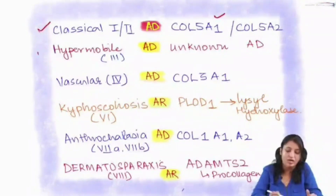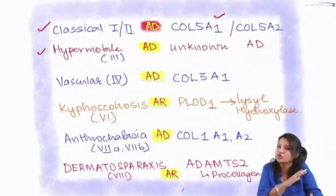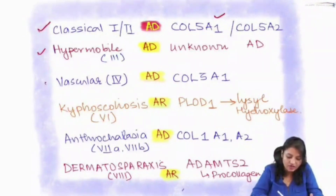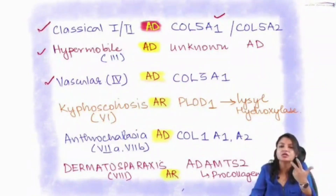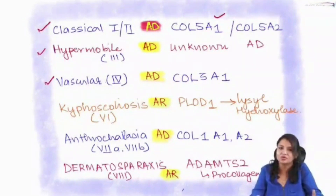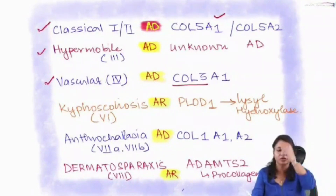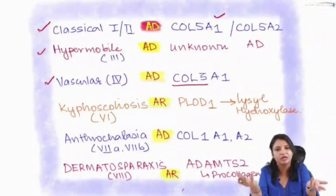The second type is the hypermobile type. Remember, the genes of all Ehlers-Danlos subtypes are known except the hypermobility type — its gene is not yet known, but it is autosomal dominant in inheritance. Next is the vascular type, which is due to a defect in collagen type 3. Collagen type 3 is rich in blood vessels and intestines, so these patients typically present with rupture of the aorta or intestinal rupture. Because it is a structural protein defect, it is autosomal dominant.